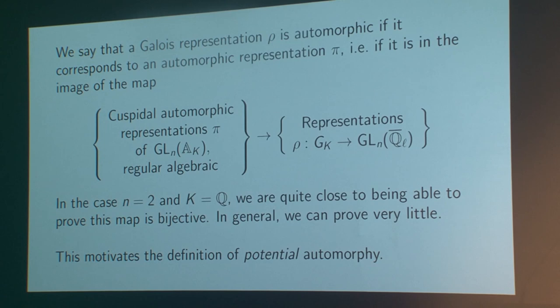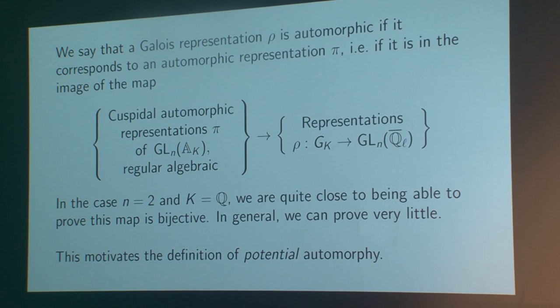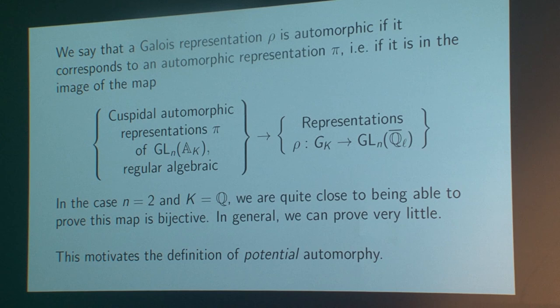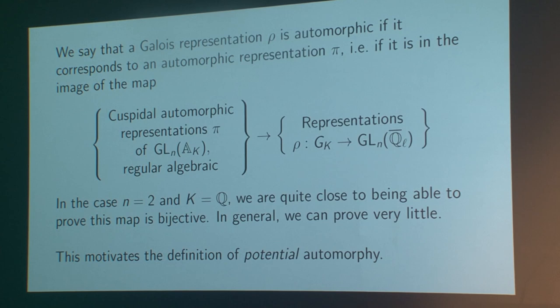Once you have one direction of the reciprocity conjecture — the ability to go from the automorphic side to the Galois side — the next step is: is this map actually surjective? We say a Galois representation is automorphic if it happens to be in the image. In the first interesting case, K = ℚ and N = 2, we know an awful lot and are quite close to proving the map is bijective. That's because we have, on one hand, the proof of Serre's conjecture by Khare and Wintenberger, and on the other hand, extremely powerful modularity lifting theorems proved by Emerton and Kisin using the existence of the p-adic local Langlands correspondence for GL₂(ℚ_p). Unfortunately, those ingredients are not available in the more general context of a general CM field or N > 2.